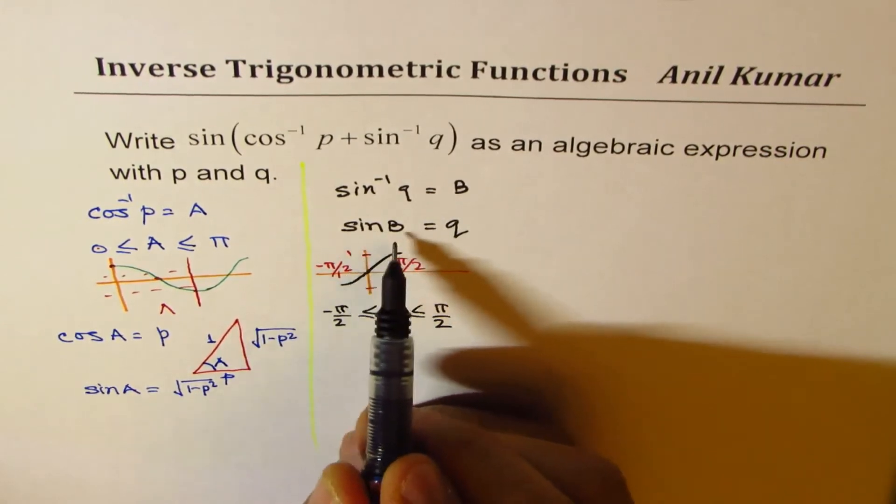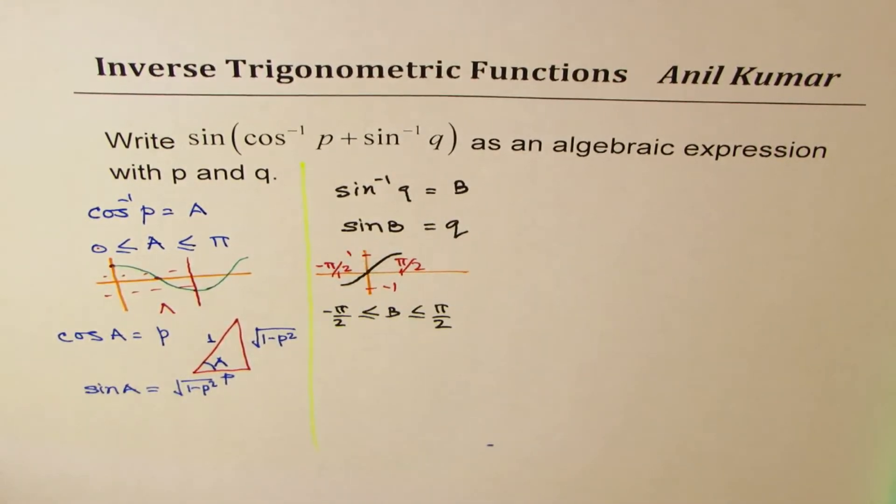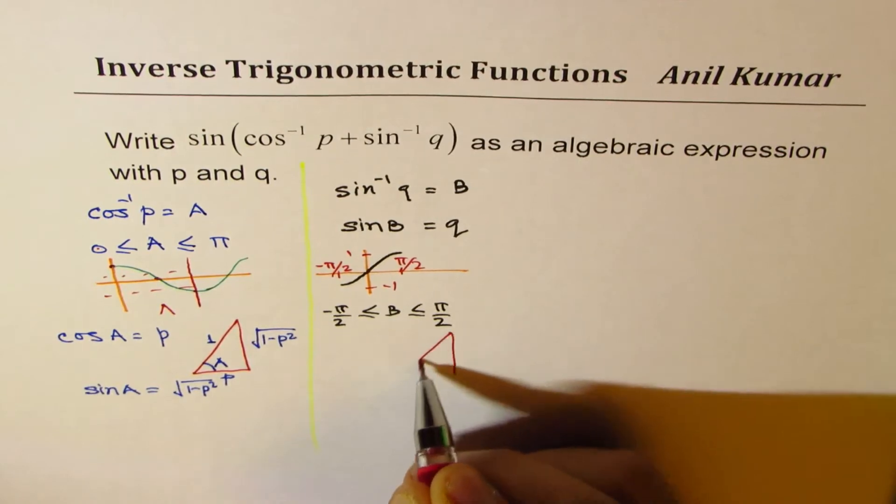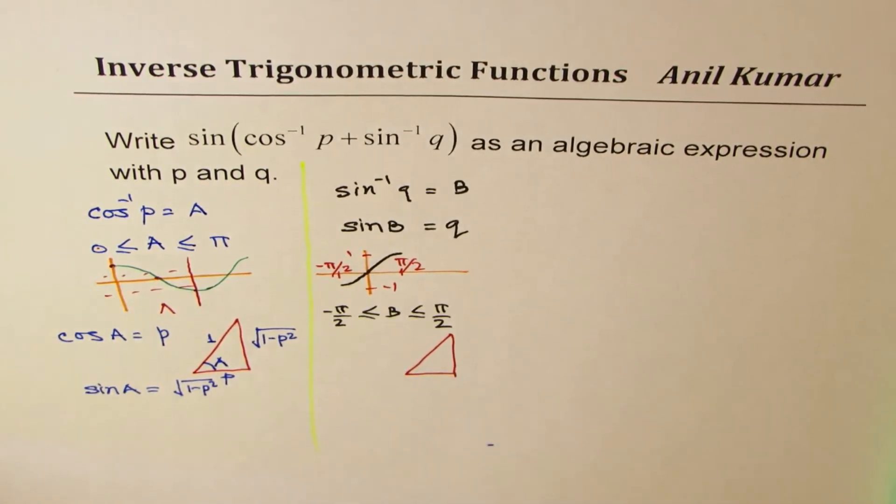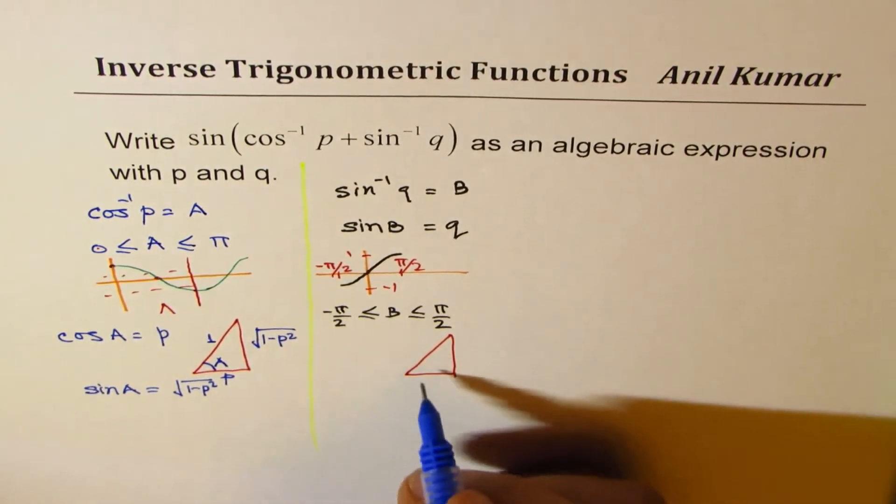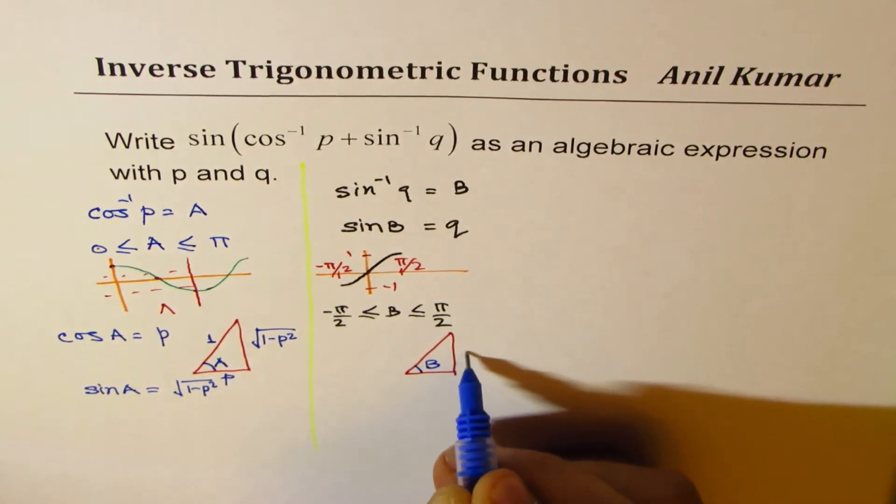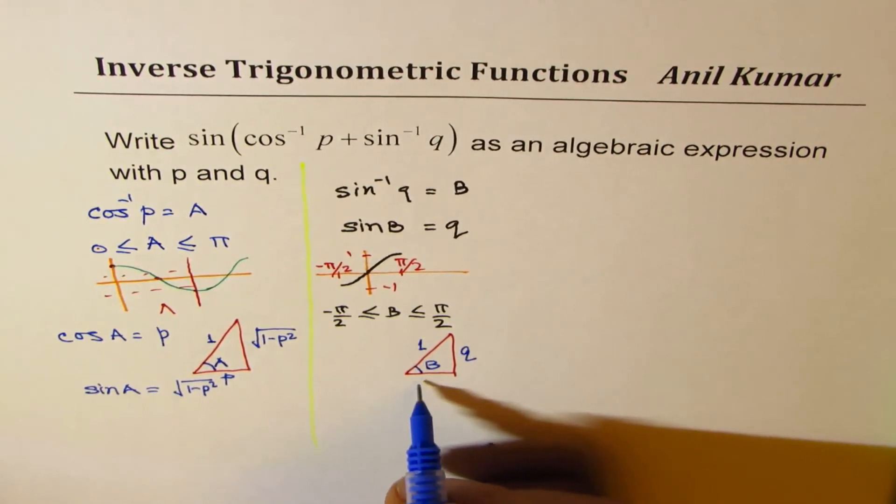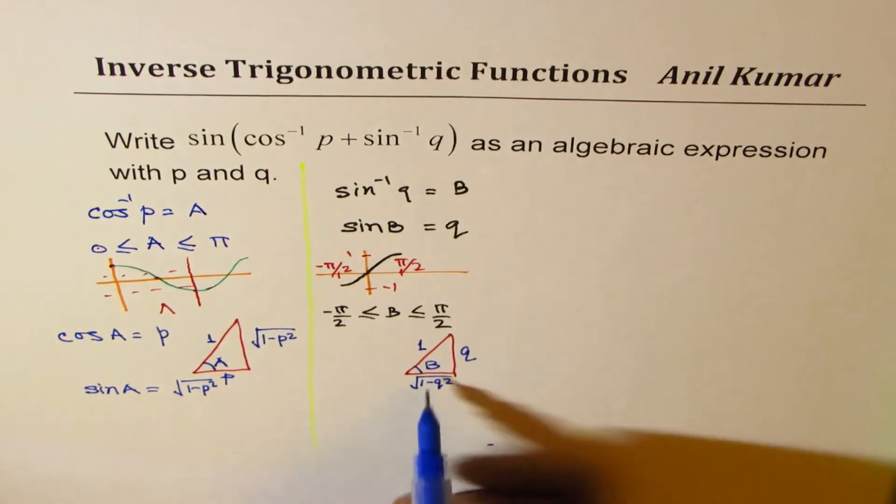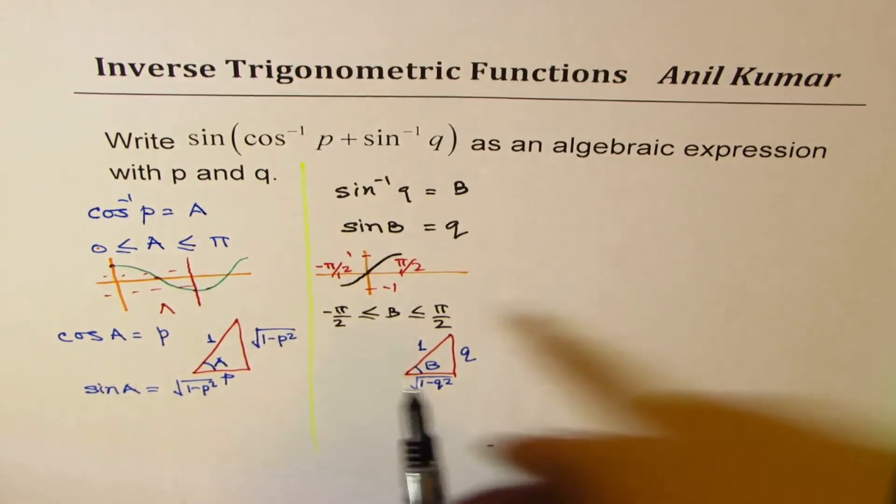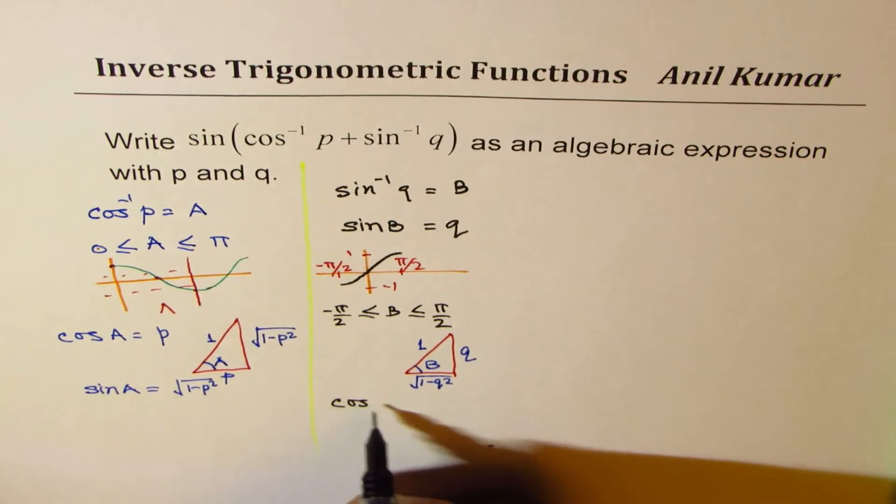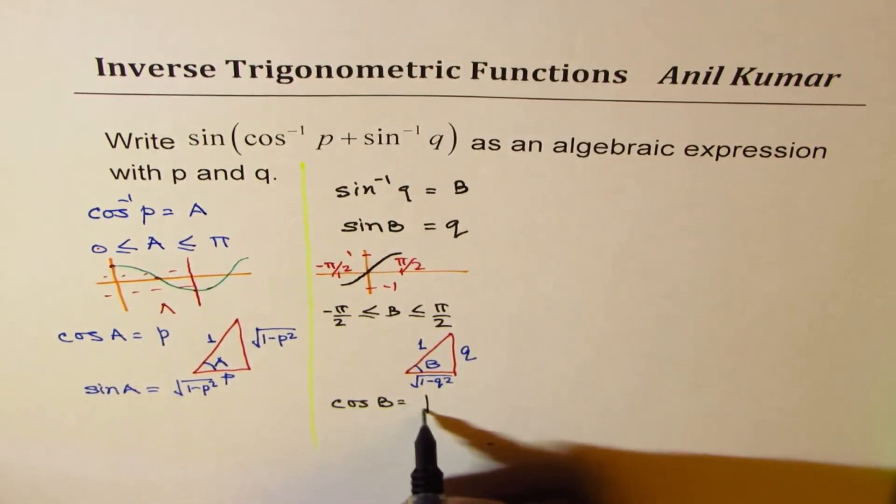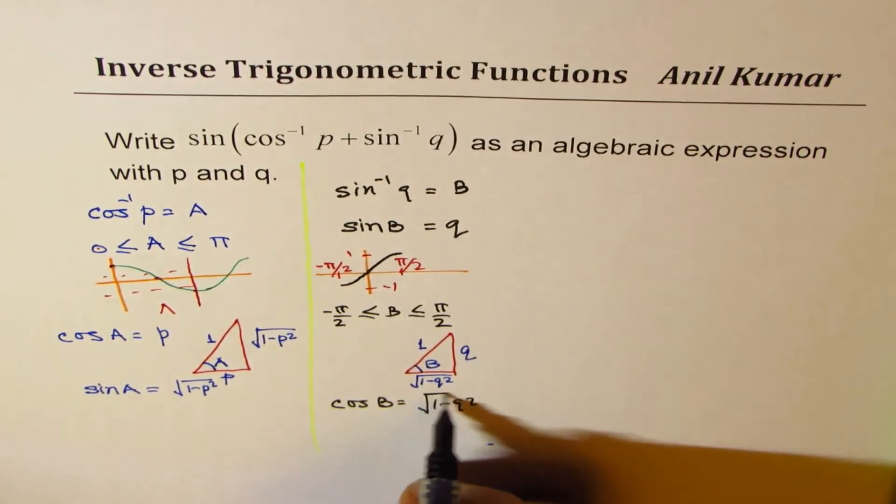Since we know that sin B is q, we can consider the triangle with opposite side as q. So if the triangle has an angle of B, opposite side is q, hypotenuse has to be 1, and the adjacent will be √(1 - q²). And that gives you the value of cos B. So we have cos B equals to √(1 - q²).